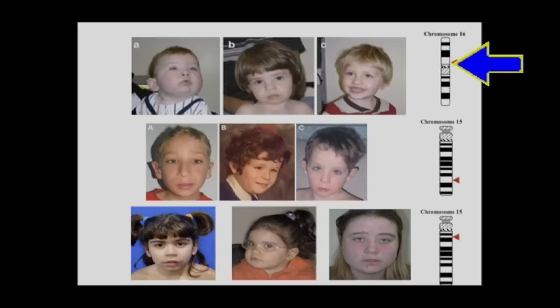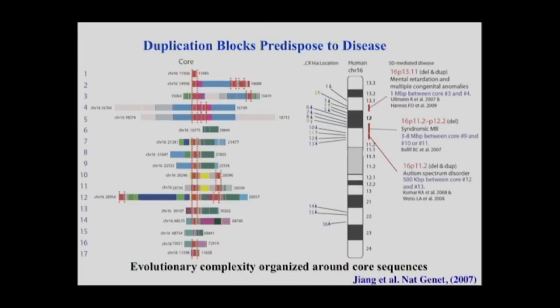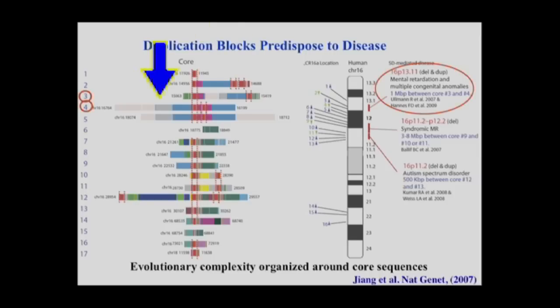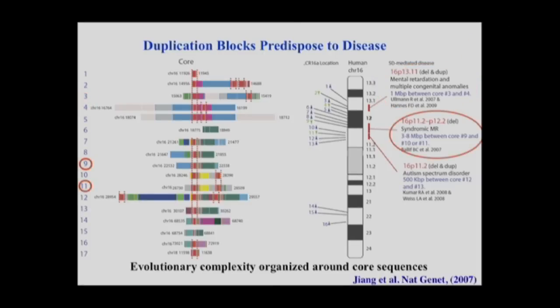These are just a few of the microdeletions among the 45 characterized. One example is the second most common genetic cause of autism — a deletion of a particular segment. Here's an autism spectrum disorder associated with a deletion on chromosome 16. Another segment on chromosome 15 is unstable, associated with schizophrenia as well as epilepsy, and is probably one of the most common causes of generalized epilepsy in the human species. Rearrangements between specific blocks result in mental retardation and schizophrenia, syndromic intellectual disability, and autism.